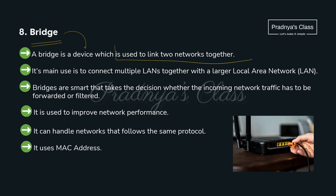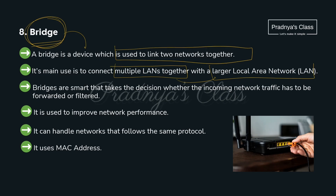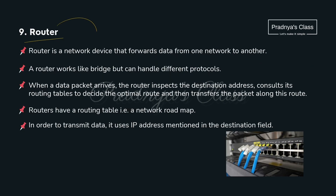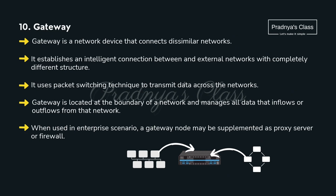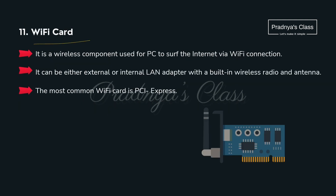A bridge is a device used to link two networks together — just like a real-life bridge. It can connect multiple smaller LANs to a larger LAN. The next device is a router, which is just like a bridge but can handle different protocols, and it shares data from one network to another even when the networks are of different types. There is also a gateway, used to connect dissimilar networks together. Finally, the last network device is the Wi-Fi card, which we use in PCs for personal use. In this way, we studied 11 network devices.